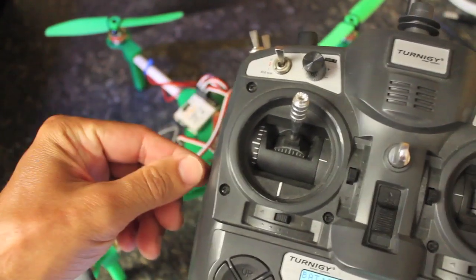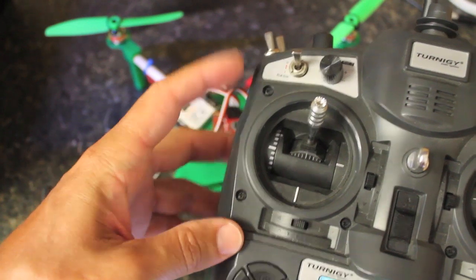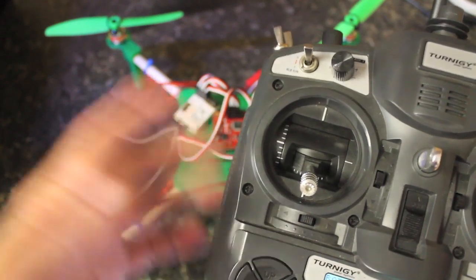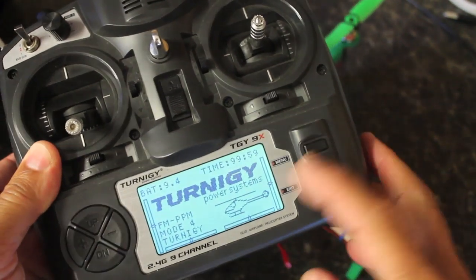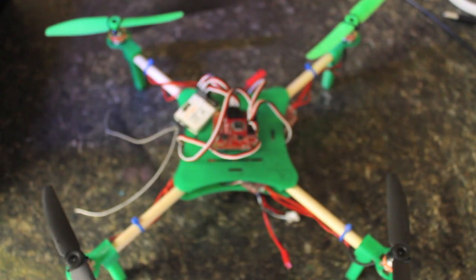Putting my throttle all the way up, giving power to the ESC, and then throttling down. So the standard ESC calibration routine, at least for the Turnigy series ESCs.